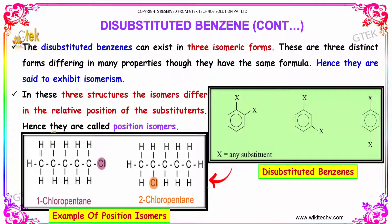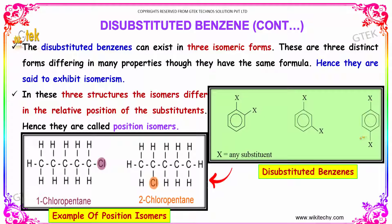Disubstituted benzenes can exist in three isomeric forms and they are said to exhibit isomerism. They are ortho, para, and meta. Since only the positions of these substituents change, they are known as position isomers.